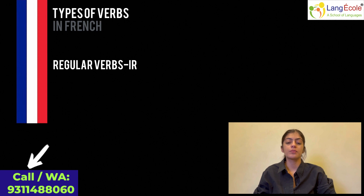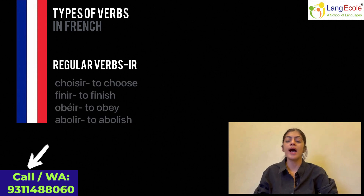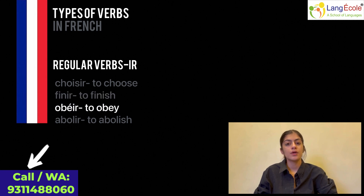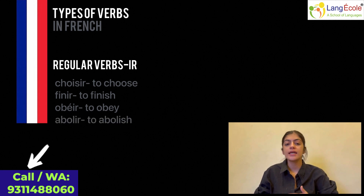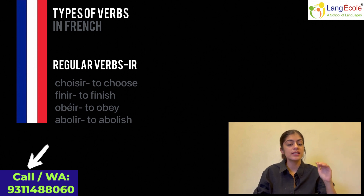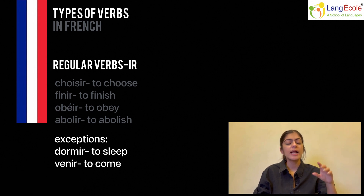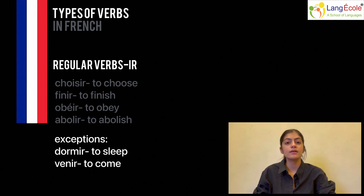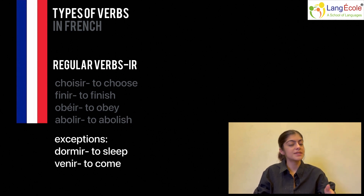Now, coming on to the second group — that is IR verbs, which also come under the category of regular verbs. I will now be listing some examples from the IR category of regular verbs. These verbs will all be conjugated in the same way. However, just like we had exceptions in the previous group, it also gets a little tricky in this one, since there are multiple exceptions in this category. I will be listing down a couple of exceptions, but more of these exist. For example, dormir – to sleep, venir – to come. These two fall under the category of irregular verbs and do not follow the conjugation patterns that IR verbs usually follow.